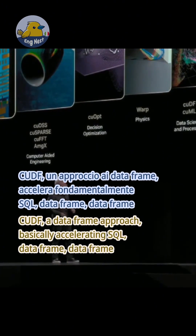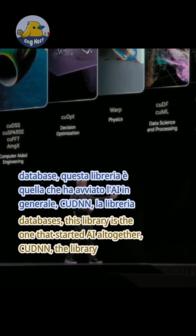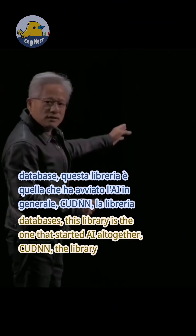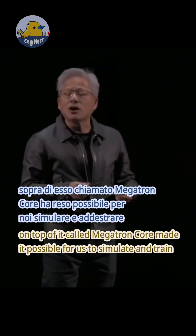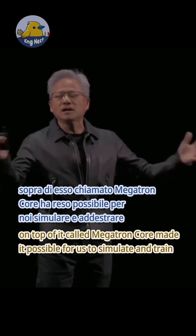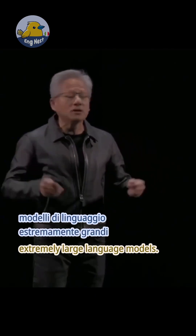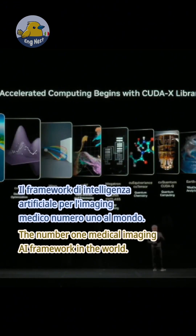cuDF, a data frame approach, basically accelerating SQL data frame databases. This library is the one that started AI altogether — cuDNN. The library on top of it, called Megatron Core, made it possible for us to simulate and train extremely large language models.